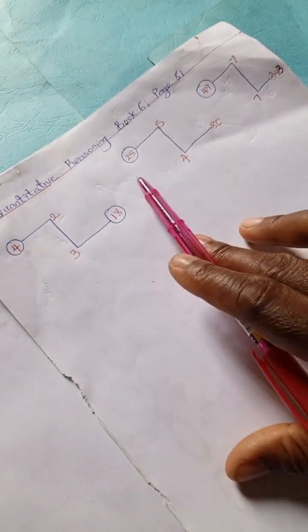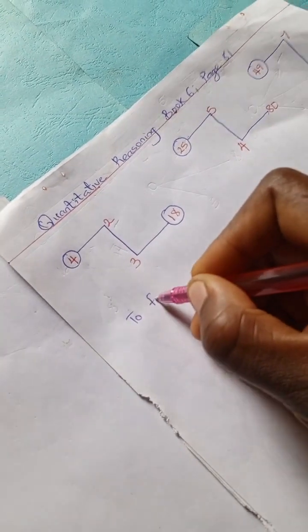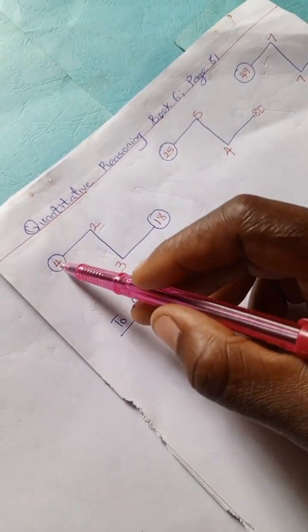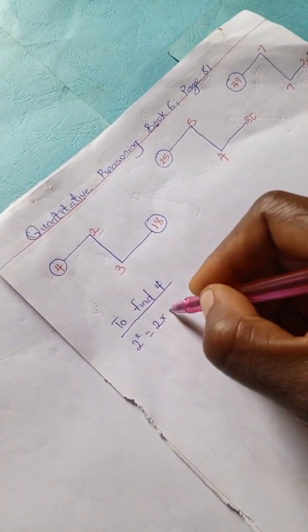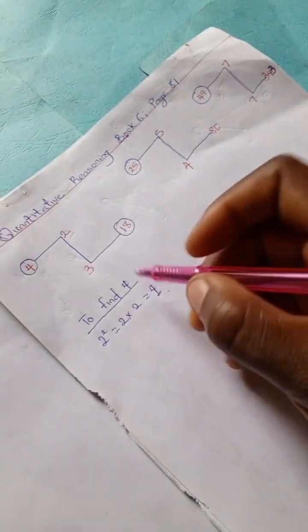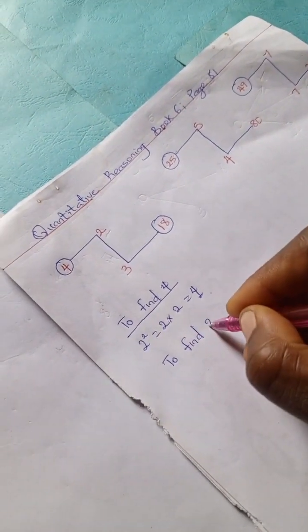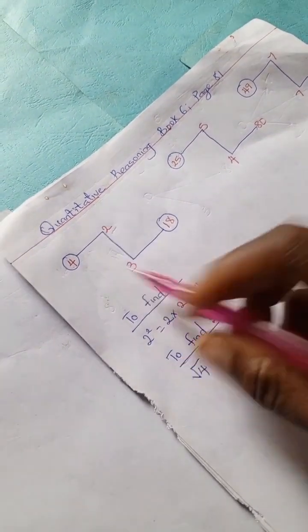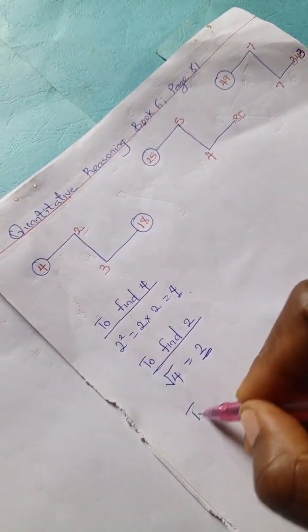Let's start with this. We have to find 4. So let's find 4. We're going to have 2 squared. 2 squared implies 2 times 2 equals 4. To find 2, which is the direct opposite of the square, we have to find 2. We can rightly say square root of 4, which is 2.